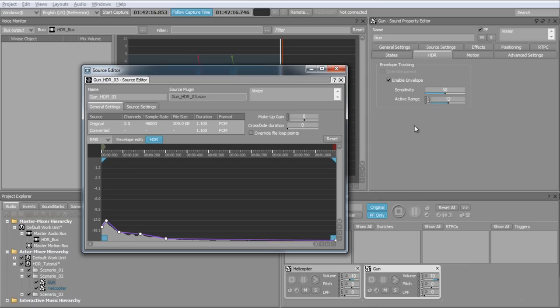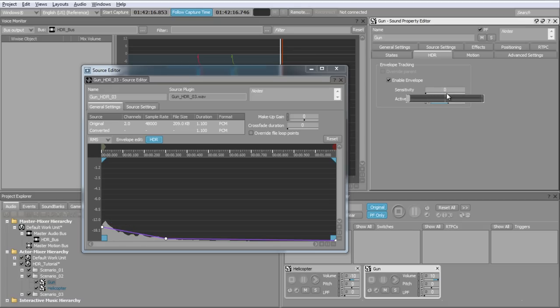Now, modifying the sensitivity fader of the gun sound from the HDR tab will add or remove detected envelope points. A good practice for sensitivity is to keep just enough points to get a representative envelope, but not more because each of the points are stored in memory.